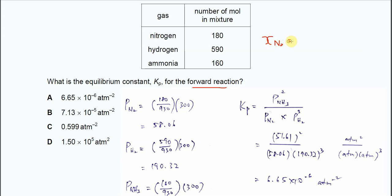It equals the moles of nitrogen, which is 180, over the total moles. Sum up all the moles to get 930. So 180 over 930. This is the mole fraction of N₂ in the mixture.